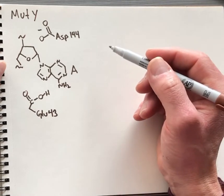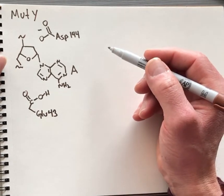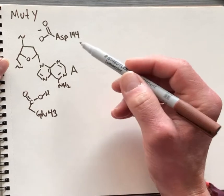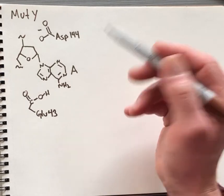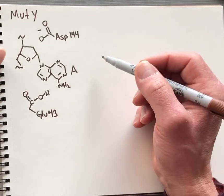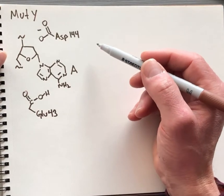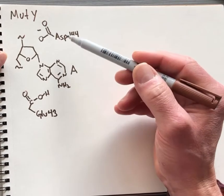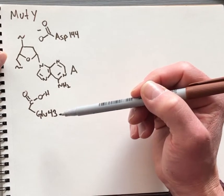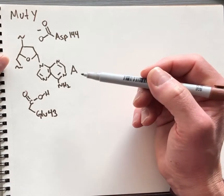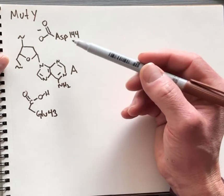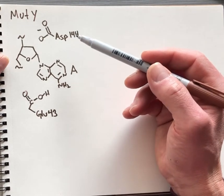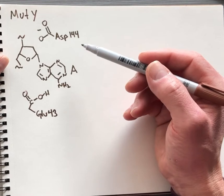The human enzyme has a glutamate and an aspartate in the same positions. There's sequence identity for these catalytic residues, highlighting the importance of these residues since they're preserved through the evolution that separates bacteria and humans. They must be important.